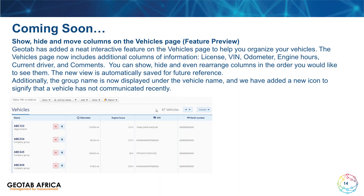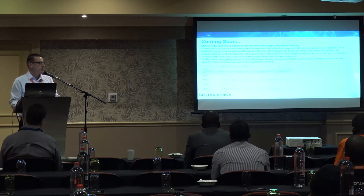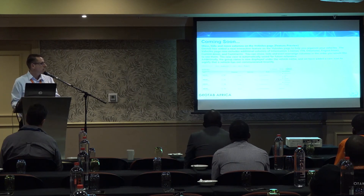On the vehicle edit screen they've made quite a big change. You can now see columns added for the license plate, VIN, odometer, engine hours, current driver, and the comments block. You can also choose to remove or add these to that screen, or rearrange the order of them by simply dragging the column from one point to another, so that you have the information you need up front.